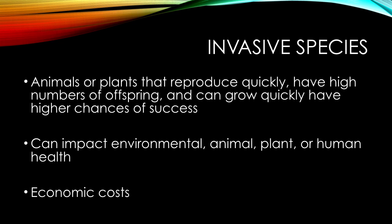To be a successful invasive species, the animals or plants must establish themselves quickly and propagate. The species that reproduce quickly, have very large numbers of offspring, can tolerate different types of environment, and can reach adulthood quickly all have a much higher chance of success. These invasive species can impact environmental, animal, plant, or human health.